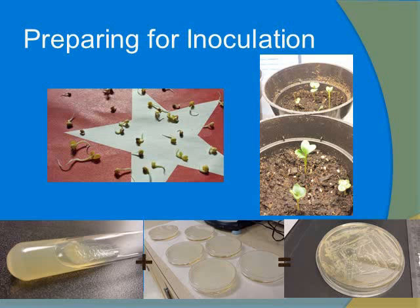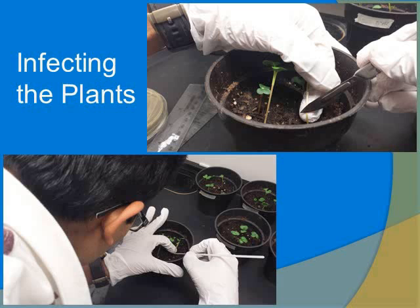Then I had to prepare for inoculation, which is the fancy way of saying infecting the plants. First, I had to grow the radish sprouts and then plant them in planters. Then I had to infect petri dishes — which I had prepared with nutrient agar — with the Agrobacterium, which came in a test tube, in order to produce enough to use in the experiment. Then I had to infect the plants by using a scalpel to scrape away parts of the stem, and then using an infecting needle in order to inoculate the plants.